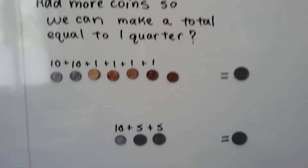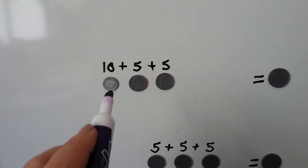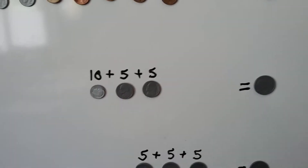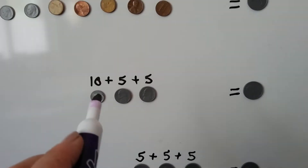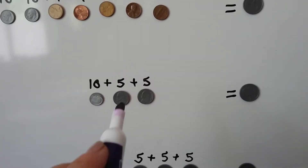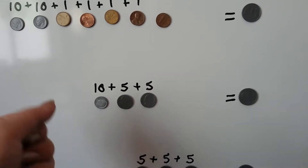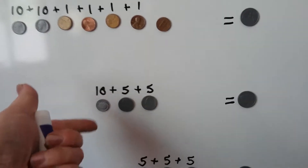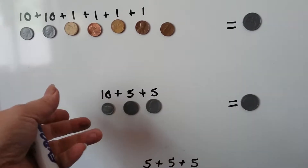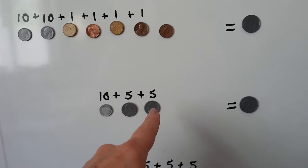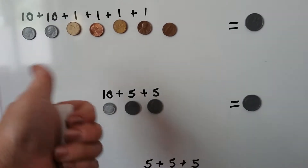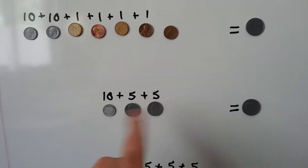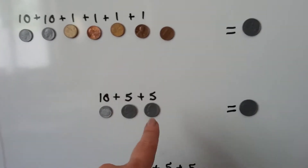How about here? We have a dime, a nickel, and a nickel. That's 10 plus five — so 10, 11, 12, 13, 14, 15, and five more: 16, 17, 18, 19, 20. So we have 20 cents.